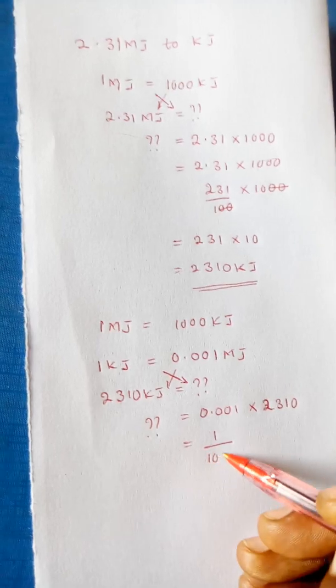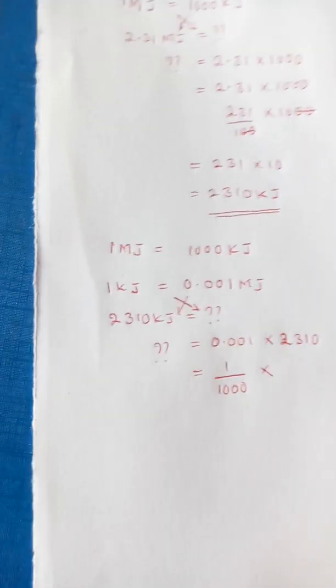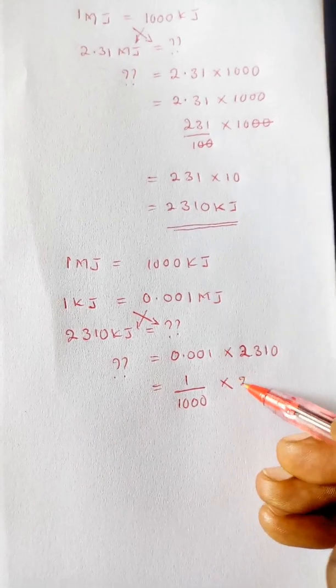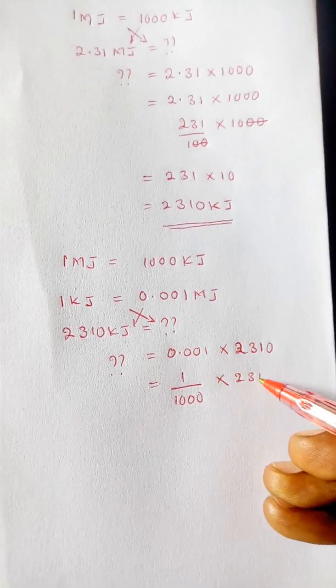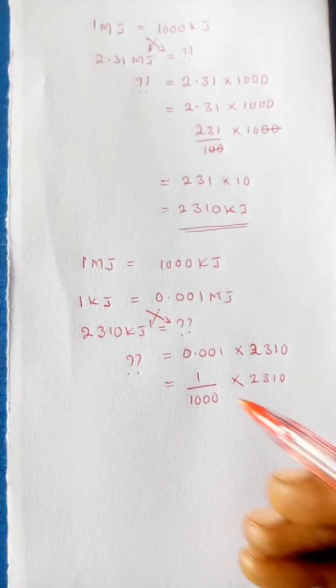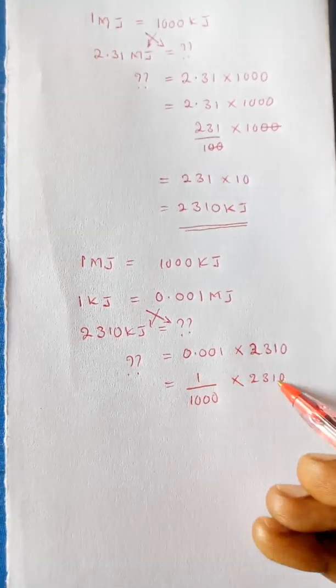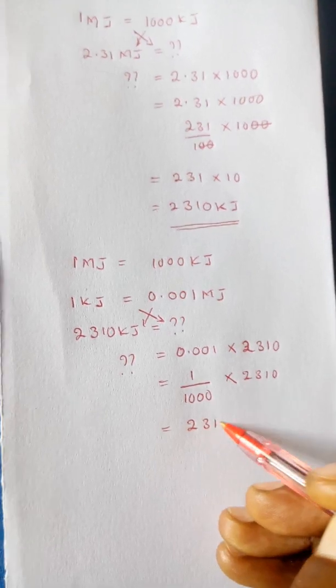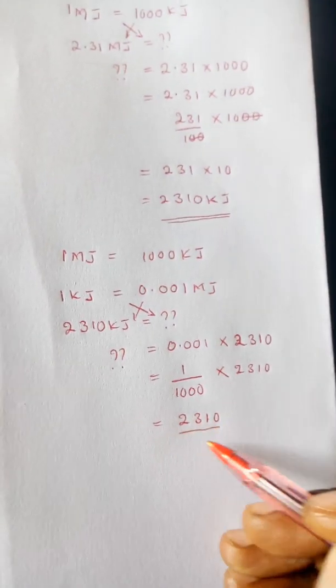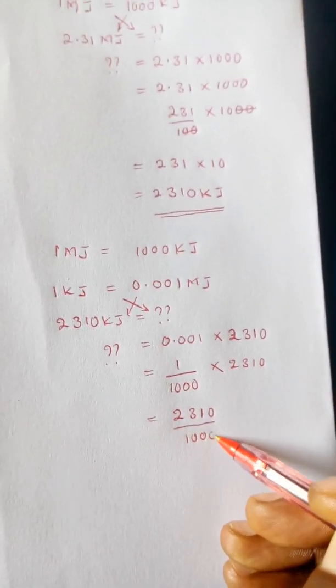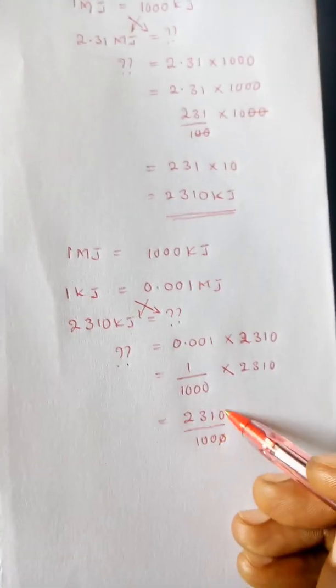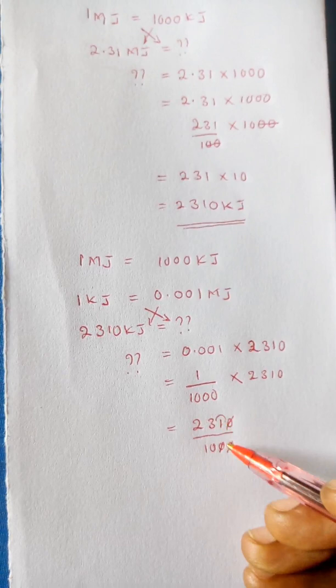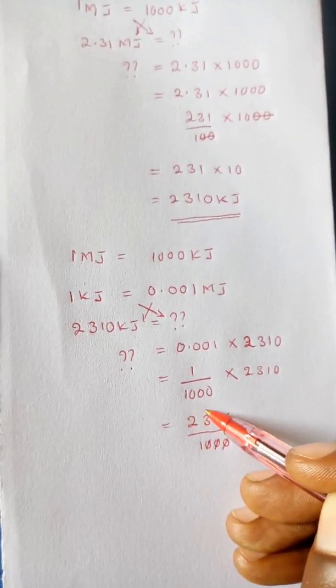So this is the same as 1 out of 1000 times 2310. So when you multiply this one on this, it will give you 2310 over 1000. So as this one goes with this, this will die with a point moving from here to here.